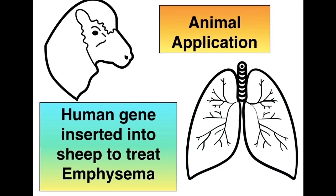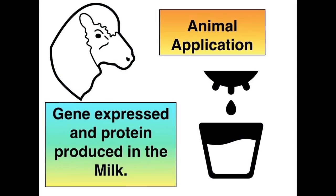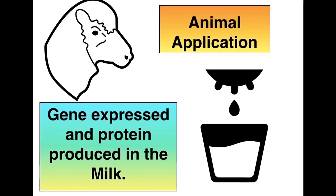An animal application is the insertion of a particular gene into sheep to treat emphysema. The gene is expressed and the protein is produced in the milk of the sheep.